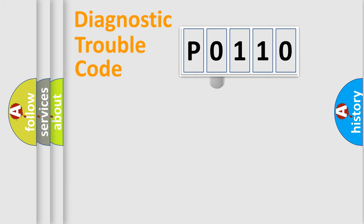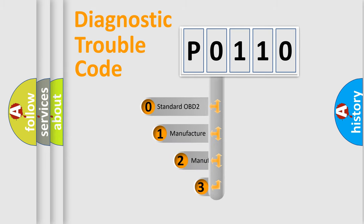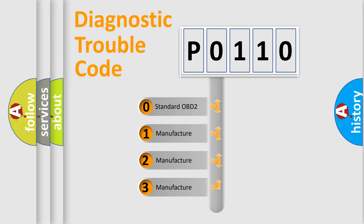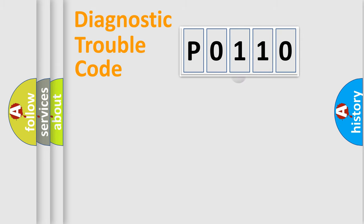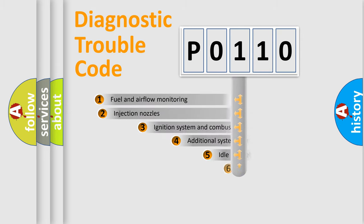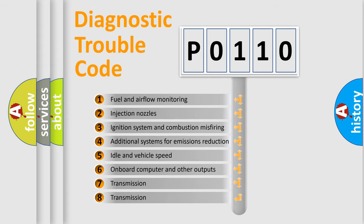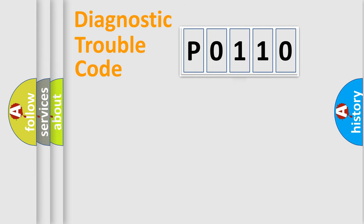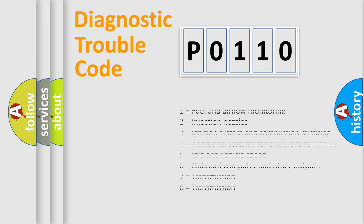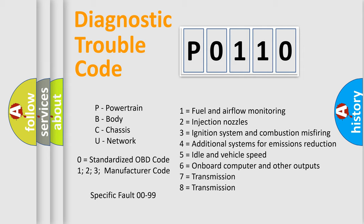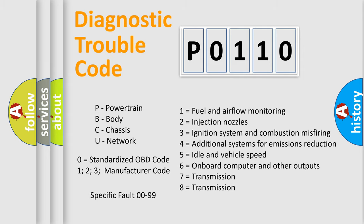This distribution is defined in the first character of the code. If the second character is expressed as zero, it is a standardized error. In the case of numbers 1, 2, or 3, it is a manufacturer-specific error expression. The third character specifies a subset of errors, and this distribution is valid only for the standardized DTC code. Only the last two characters define the specific fault of the group.